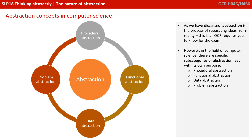As we discussed, abstraction is the process of separating ideas from reality, and this is all OCR requires you to know for the exam. However, in the field of computer science there are more specific subcategories of abstraction, each with its own purpose within the context of computer science.